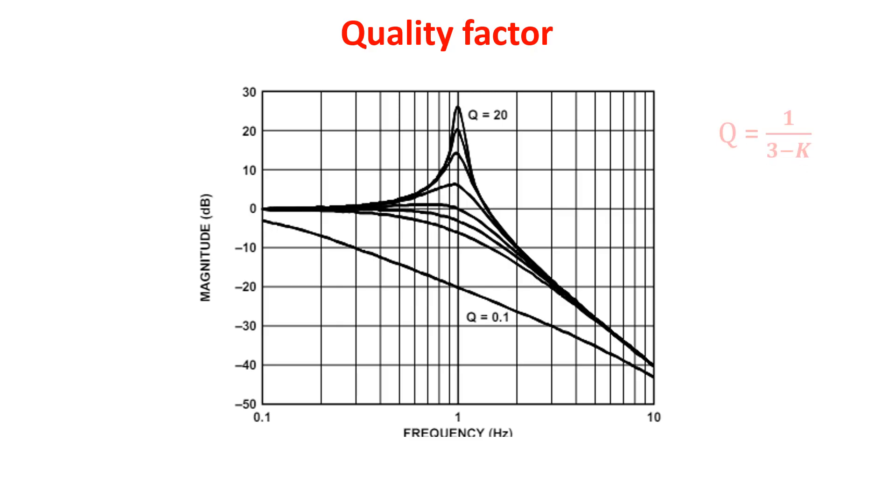In our case being Q one over 3 minus K, we want K at least 1 but no more than 3. At K equals 3 or more Q is infinite or negative and the circuit is not stable anymore. For K less than 1 we have a quality factor less than 0.5 which is a poor one, making the gain of the filter go down much before the cutoff frequency.